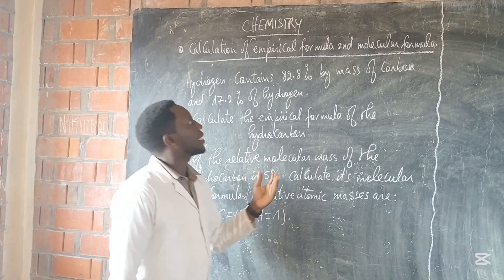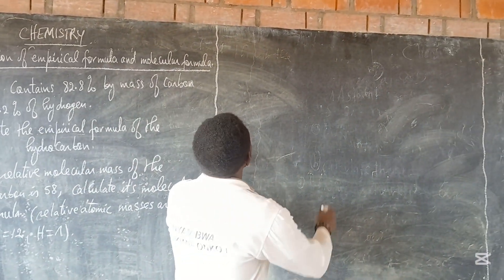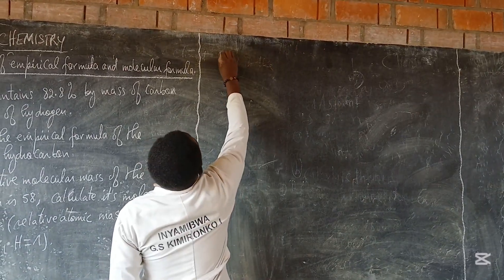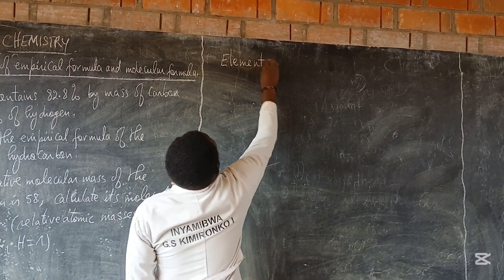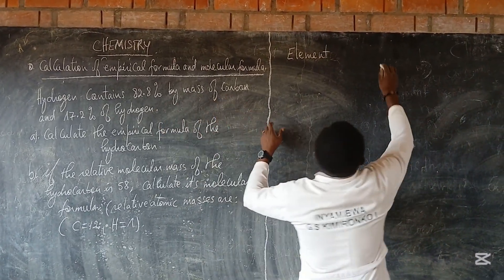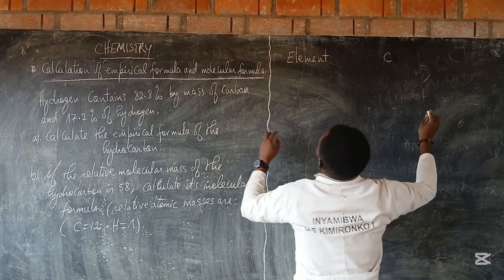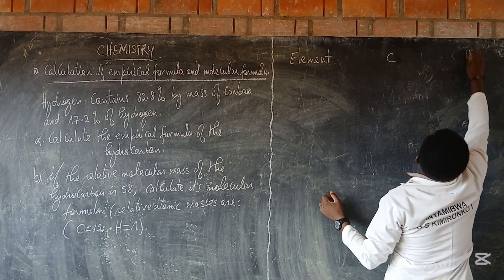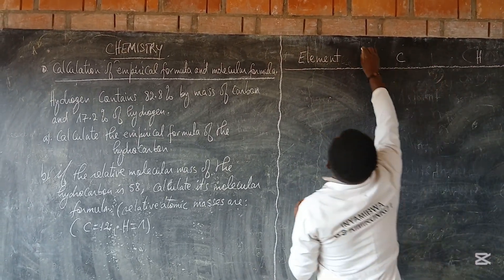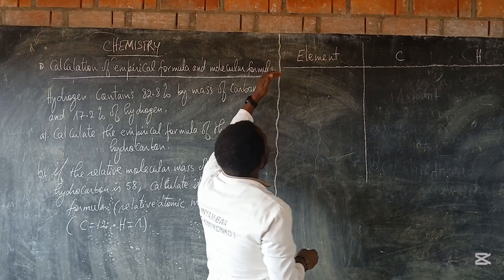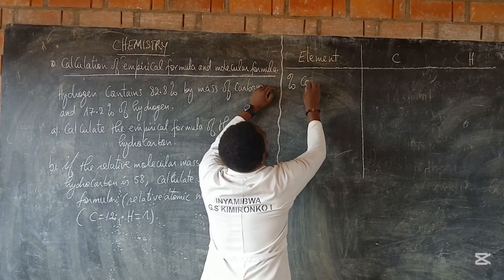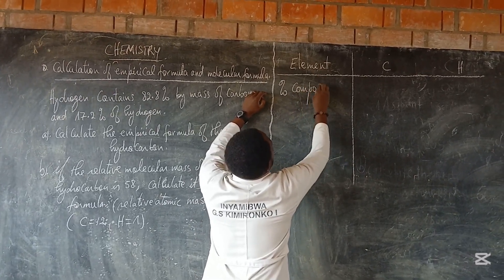Let's begin by finding the empirical formula. Remember, we have to draw a table. The first column contains the element — we name the elements that we have. We have element carbon and we have element hydrogen. After listing the elements, we have the percentage composition column.